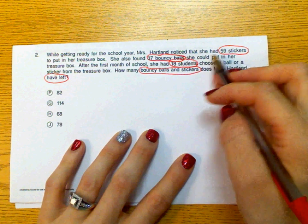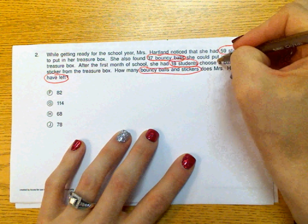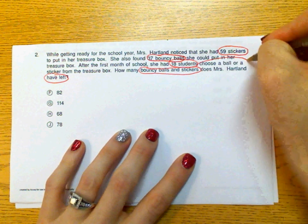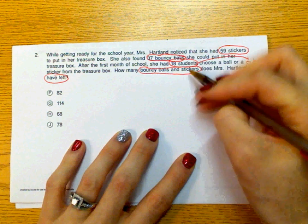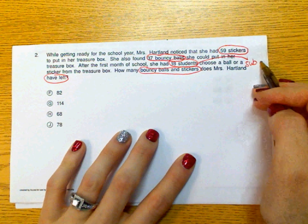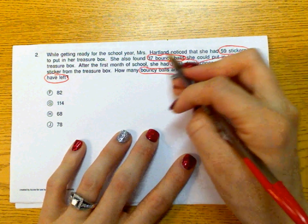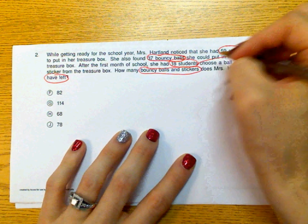So we see that the students chose a ball from the treasure box. So this is going to be subtraction. So I always tell the students to find the text evidence and put a little note out that they're going to subtract. We see that there's 59 stickers and bouncy balls, so we're going to add those together.